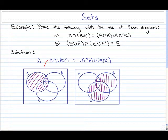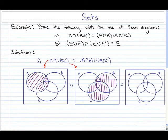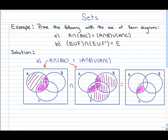Now we have A here and B union C here, and what we want is the intersection of those two. The intersection just means what's in both diagrams. Looking at the shaded regions common to both, we can see that the only regions in common are this section, this area here, and this area right here. So the final answer for the left hand side is those three sections.